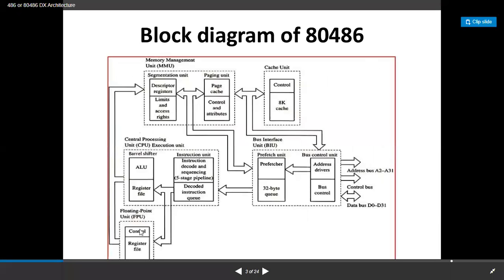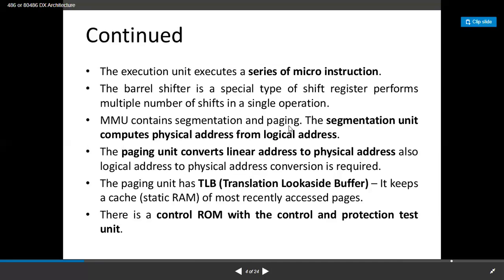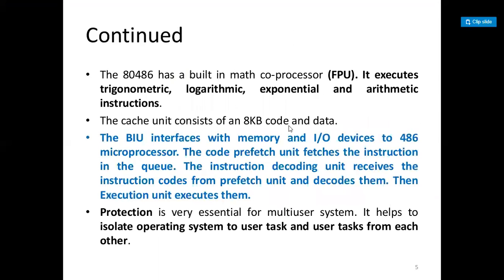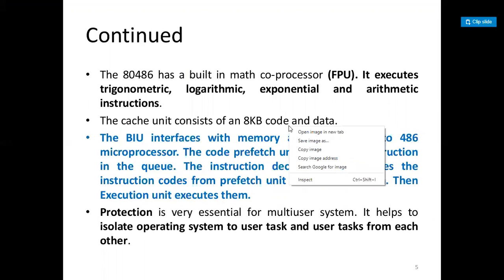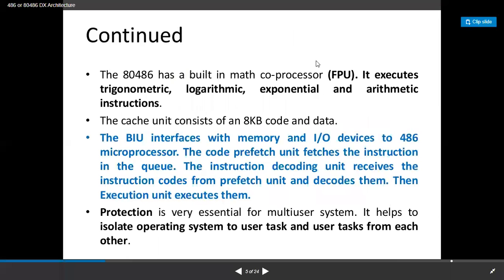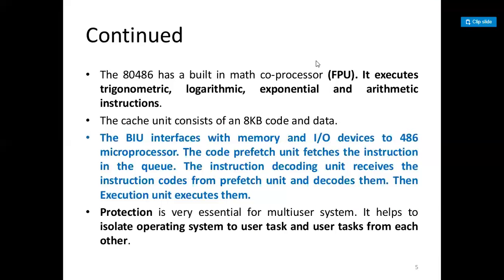The 80486 is famous for its math co-processor, which can execute trigonometric, logarithmic, exponential, and arithmetic instructions. The cache unit consists of 8 KB of code and data. The BIU, that is the bus interface unit, interfaces with memory and input/output devices.